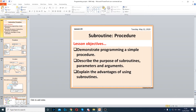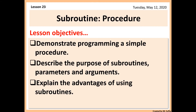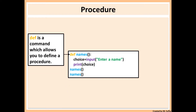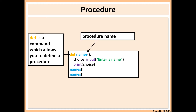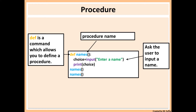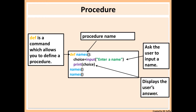This lesson will be about subroutines and procedures. We've got an example of a procedure in Python. 'def' stands for define — you use that to define your procedure. Once you've put 'def', you need to put the name of your procedure. After the name, you open a parenthesis, close it, then put a colon. Everything inside the procedure needs to be indented.